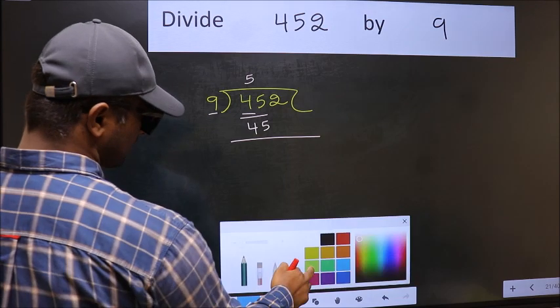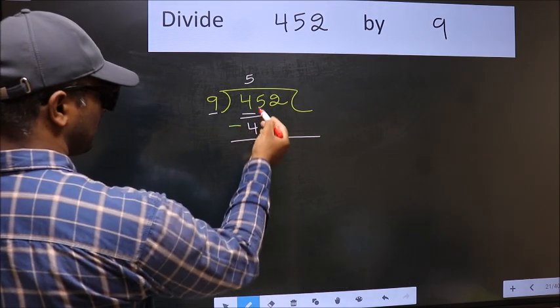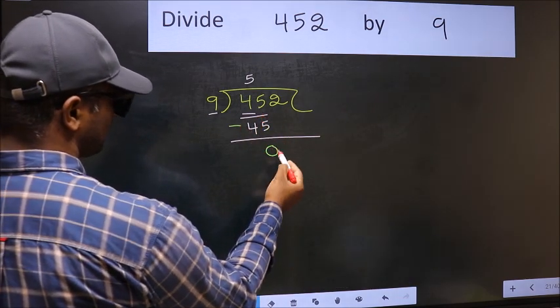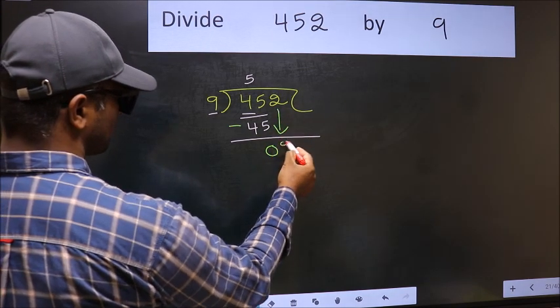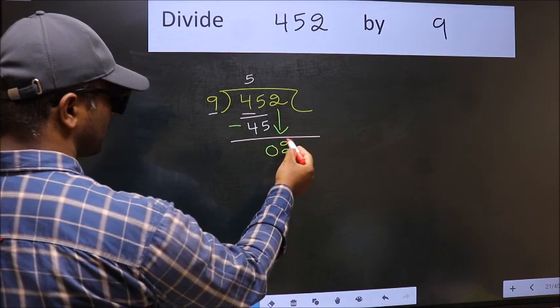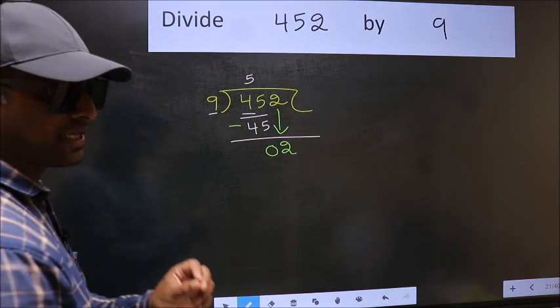Now you should subtract. 45 minus 45, 0. After this, bring down the next number. So 2 down. After this step, the mistake happens.